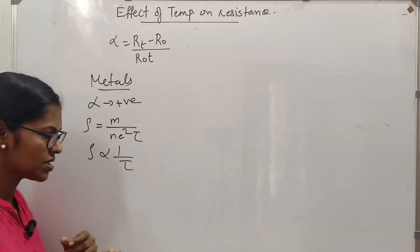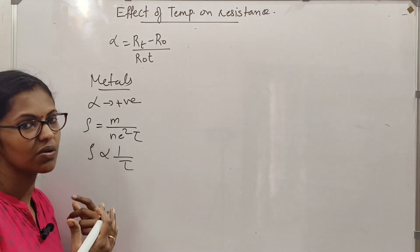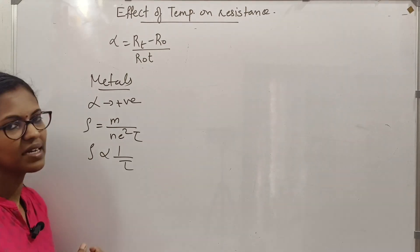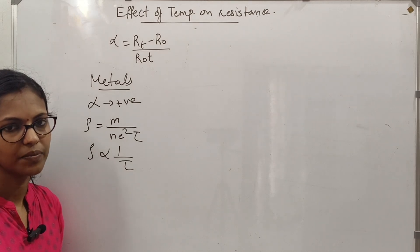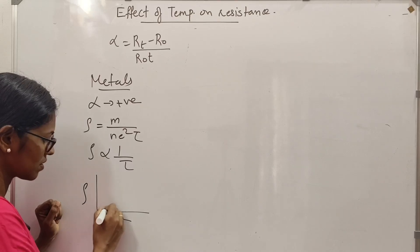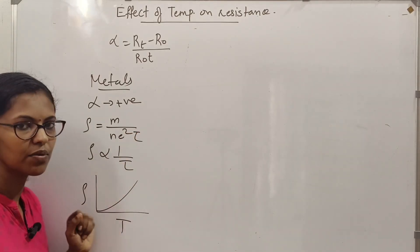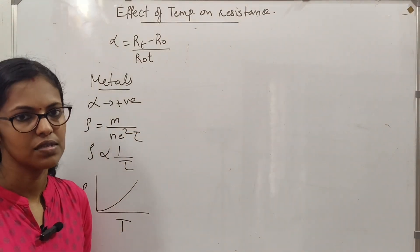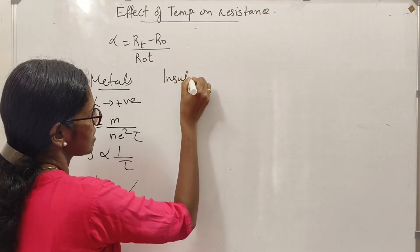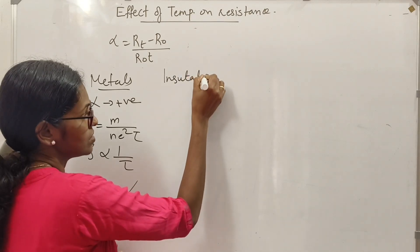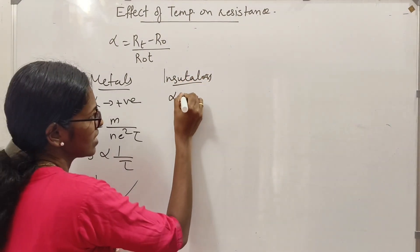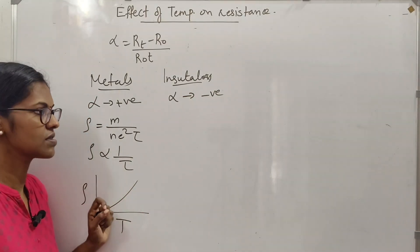When the temperature increases, the resistance increases, so the temperature coefficient of resistance is positive. We are going to represent this graphically. We also have to consider insulators. In that case, we have to consider the negative temperature coefficient of resistance.